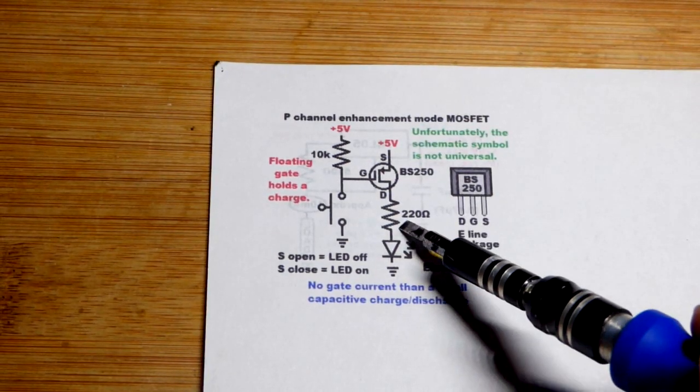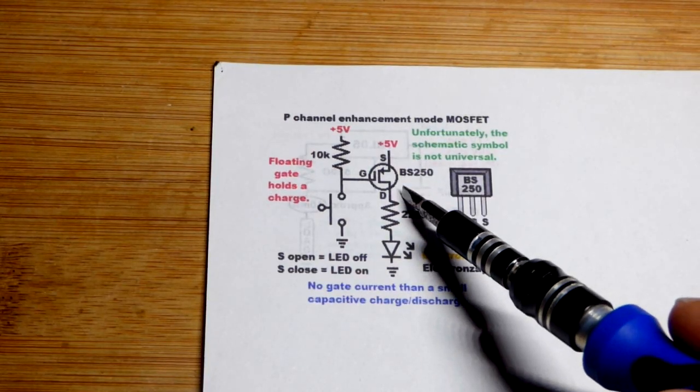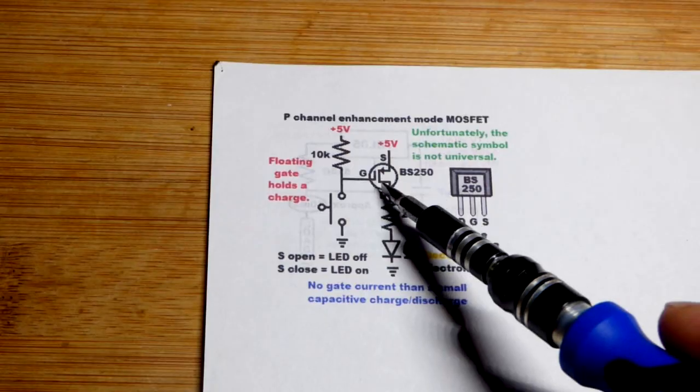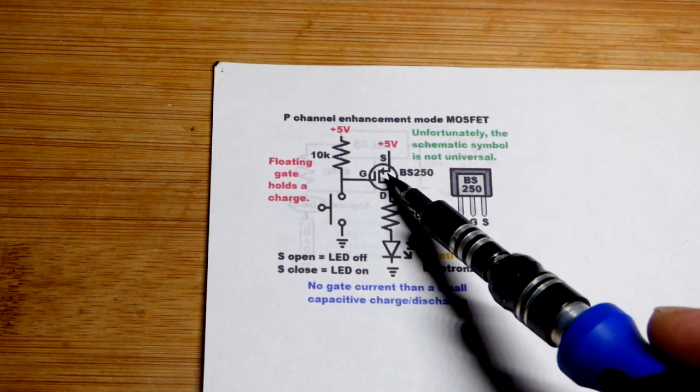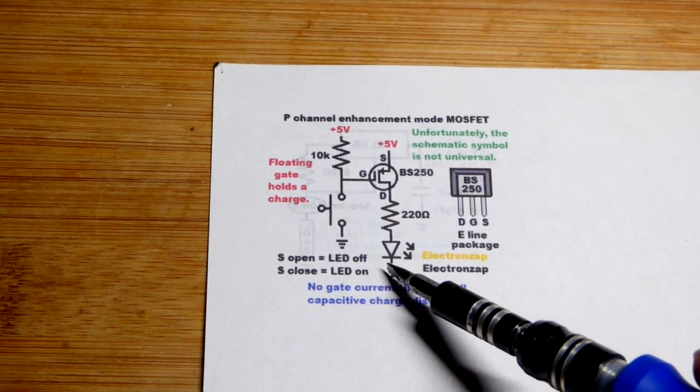So now I thought I had a diagram for the N channel enhancement mode MOSFET like this, but I just have the P channel. I have to make more diagrams coming up. But in this case we have this P channel enhancement mode MOSFET. It's waiting for a low input right there to make the P channel more positive. We're keeping this simplified and to conduct.